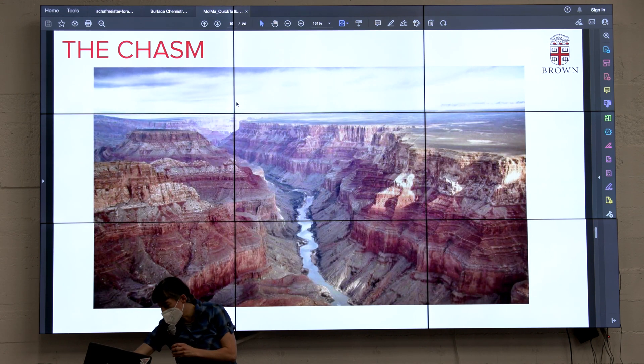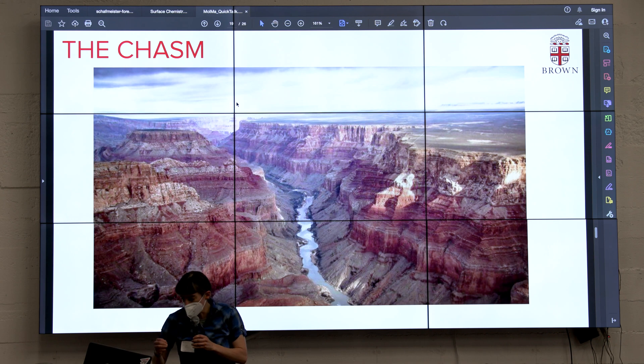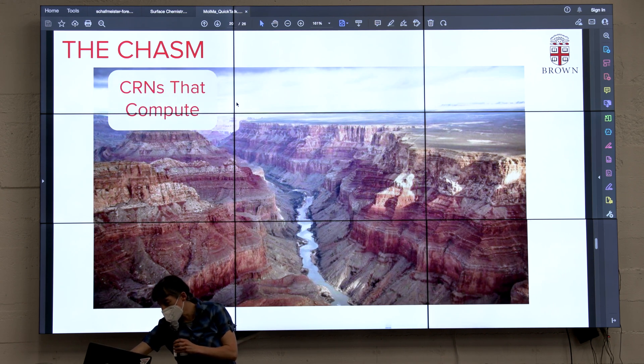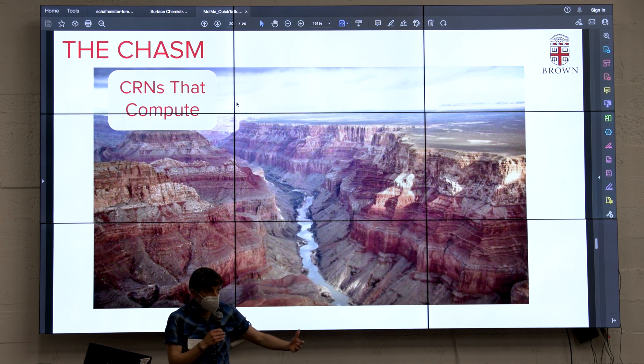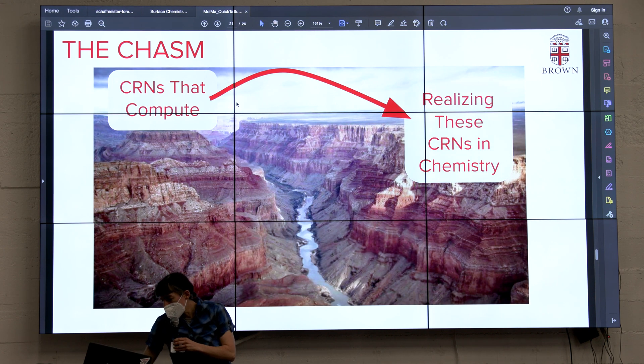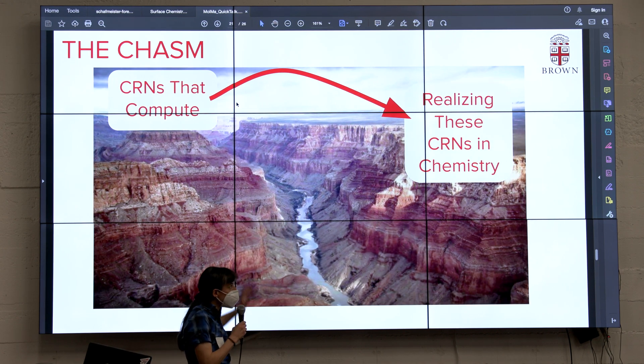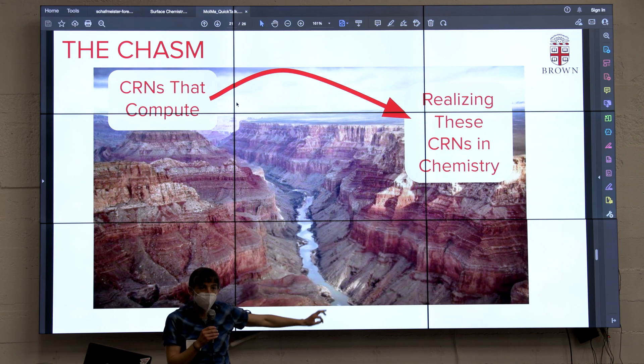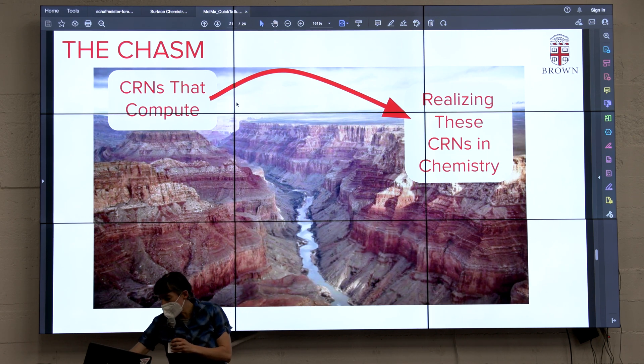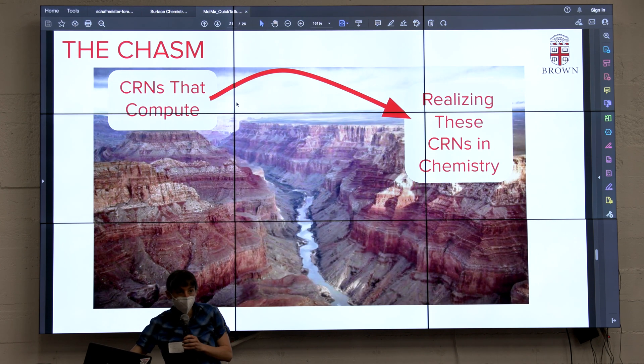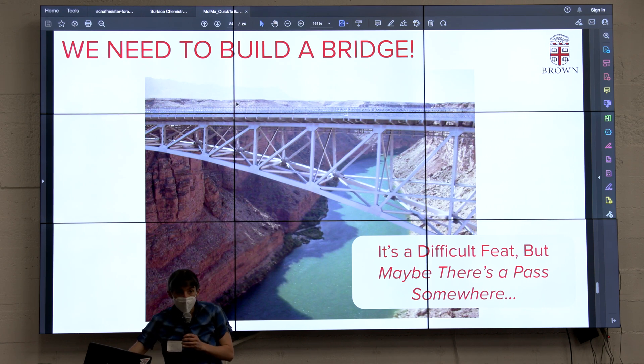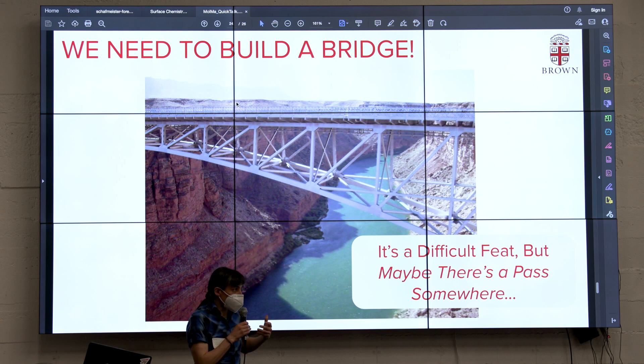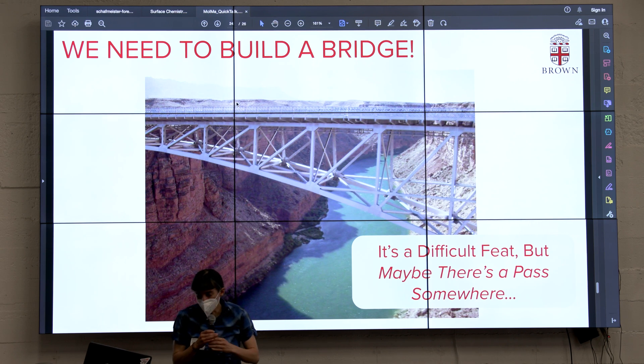The problem I'm posing—and I don't have all the solutions—is that if we want to compute in solution, we need reaction networks that interlink and compute, but they must be realized in real chemistries. We have to map these CRNs to actual chemistries that can orchestrate them. There's a huge chasm to jump. This is extremely difficult, but there are paths: using machine learning, cataloging reactions, etc.